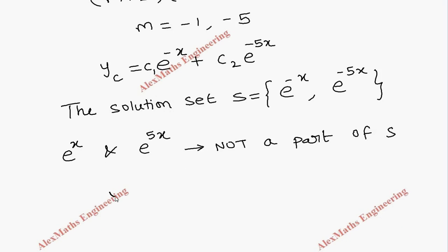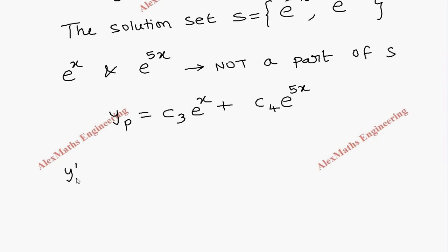Therefore, let's assume the particular integral as c3 e power x plus c4 e power 5x. Now, let's find its first derivative that will give us c3 into e power x plus 5c4 e power 5x. Then, second derivative will be c3 e power x plus 25c4 e power 5x.